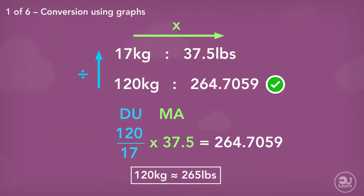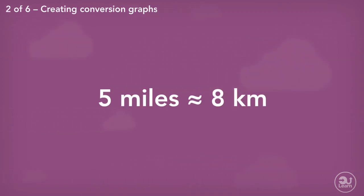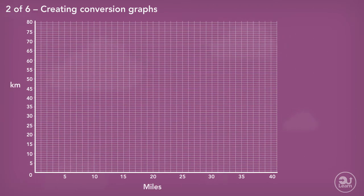What if you knew the conversion between two units and wanted to create the graph yourself? Let's say we know that five miles is approximately eight kilometers. How could we represent this on a graph? Well, let's first put that point on the graph. We go across five miles and up eight kilometers. This point will lie on our conversion line.